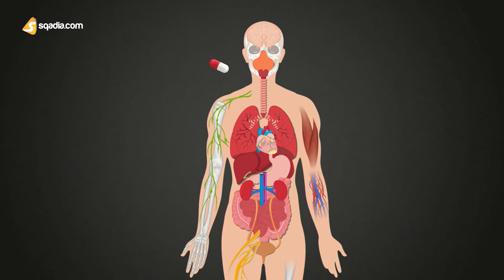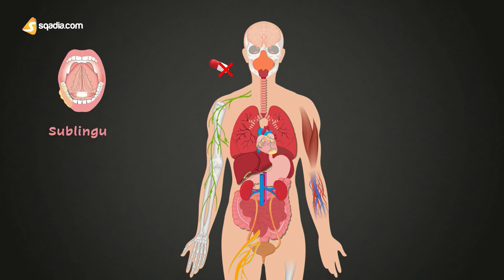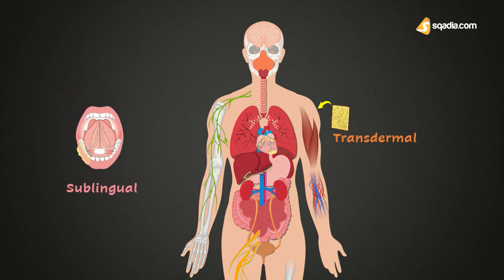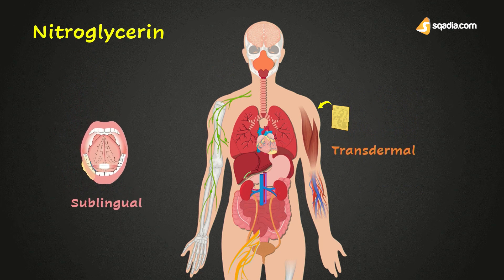We have the same options for drugs. We can either change the route of administration and switch to one that bypasses first-pass metabolism, or we can increase the oral dose. We can switch from oral route to either sublingual, transdermal, or parenteral route, because through parenteral route we are administering the drug directly into the circulation. As for sublingual absorption, veins originating there do not join the portal system, and same goes for transdermal absorption. As in the case of nitroglycerin — if you remember from our videos on nitroglycerin — it is usually administered sublingually or transdermally, and that's due to the fact that it undergoes very high first-pass metabolism, with about 90% of the nitroglycerin cleared through it.